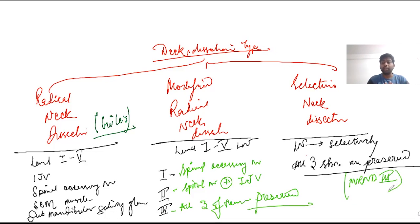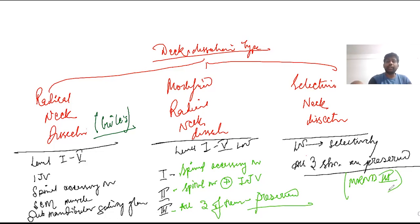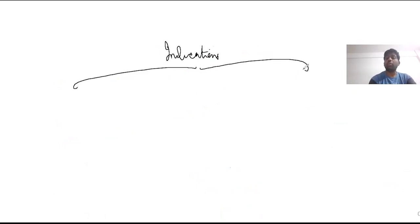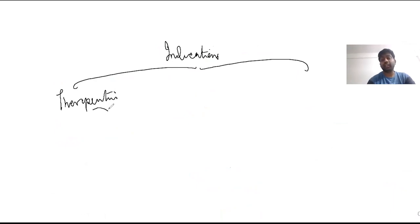We should be very clear about the definitions of radical neck dissection, modified radical neck dissection, and selective neck dissection. There is also another way of classifying neck dissection based on indications. Depending on indications, neck dissection can be classified into two types: therapeutic neck dissection and prophylactic neck dissection.